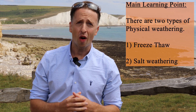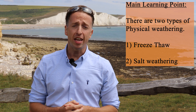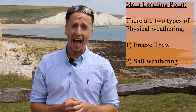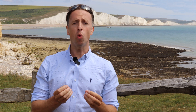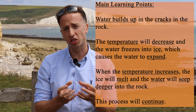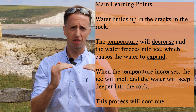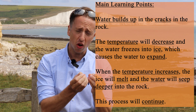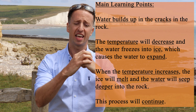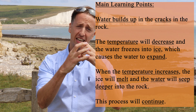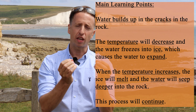There are two types of physical weathering: freeze-thaw and salt weathering. Freeze-thaw is when water builds up in the cracks of rocks. When the temperature decreases, this water inside the rock then freezes. As that water freezes, it expands in size, which then causes the rock to break further.